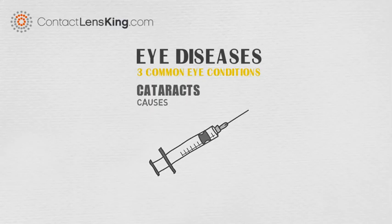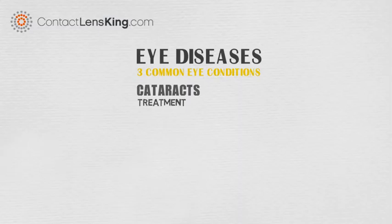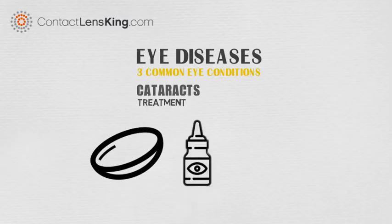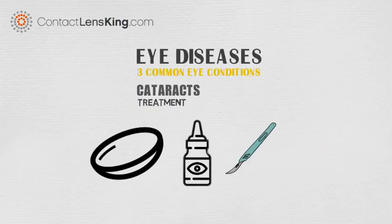Depending on the severity of individual cases, a person can opt to treat the condition through the use of corrective lenses, special eye drops to help remove any protein buildup on the eye's natural lens, or undergo a surgical procedure to replace the cloudy natural lens with a clear artificial lens.